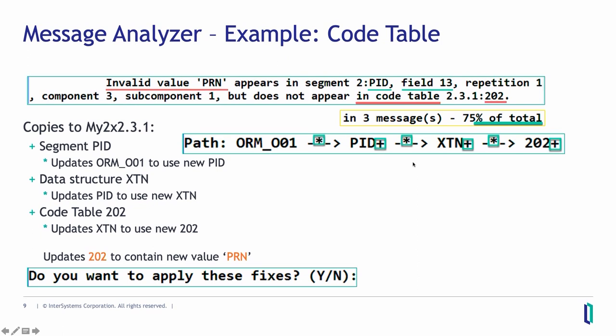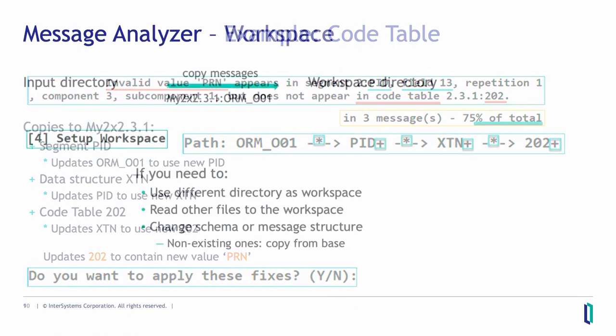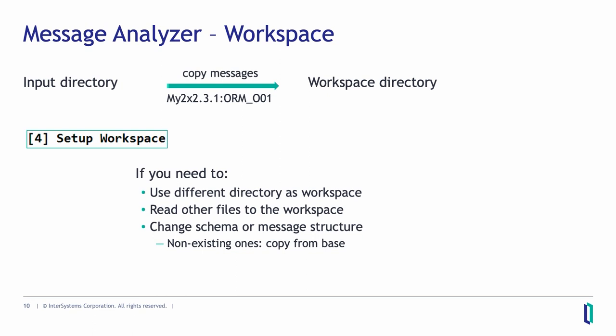The message analyzer will show you as text what it found and what it will change, and at the end a short version of exactly what it did. A star means it updated a reference — for example, from the ORM message to the PID segment. A plus sign means an element got added. For all issues found, you can choose whether to apply the fix or skip it. The message analyzer works on a copy of your messages in a workspace directory, which you specify only once.